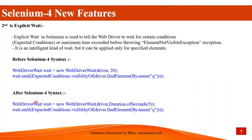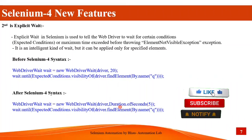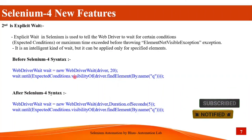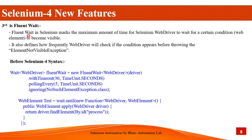After Selenium 4, the WebDriverWait syntax changes slightly: you are required to pass a Duration.ofSeconds value instead of raw seconds. So wait.until(ExpectedConditions.visibilityOf(element)) remains, but Duration.ofSeconds is used in Selenium 4 as compared to the previous version. Fluent wait defines the maximum amount of time Selenium WebDriver waits for a certain condition, and also defines how frequently WebDriver will check if the condition occurs before throwing ElementNotVisibleException.